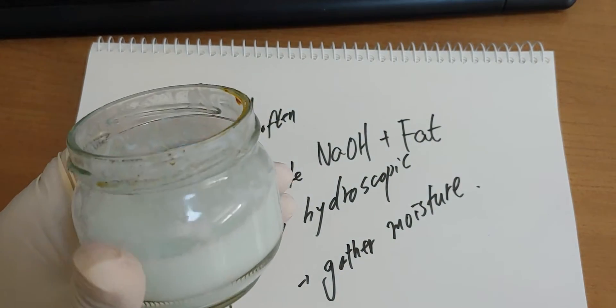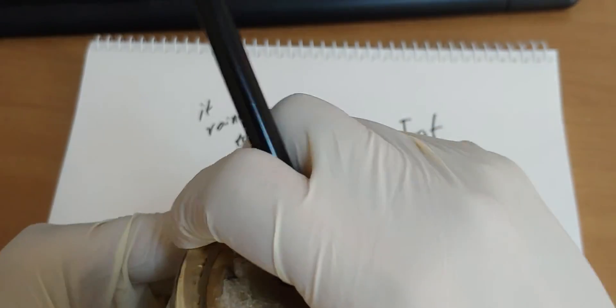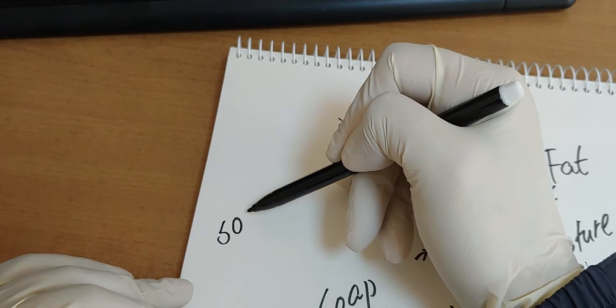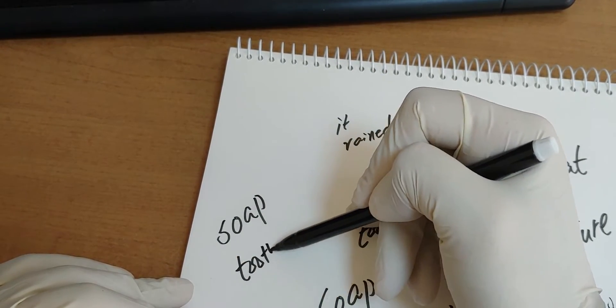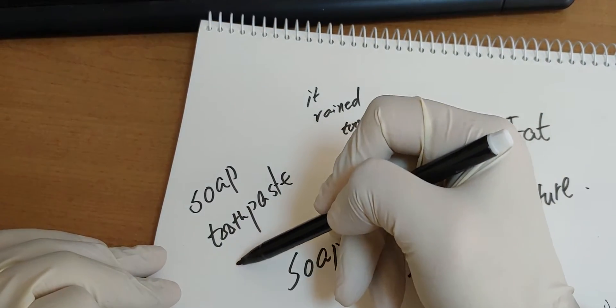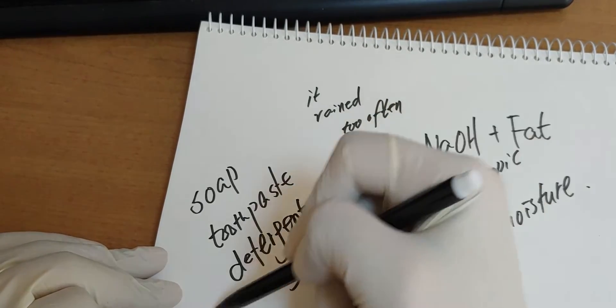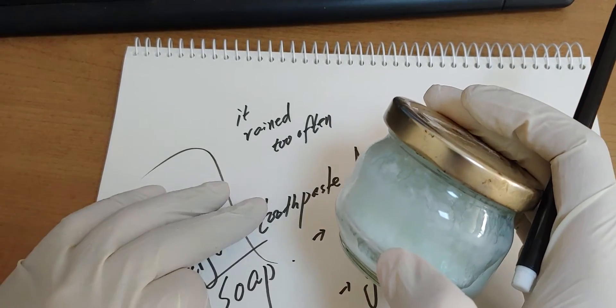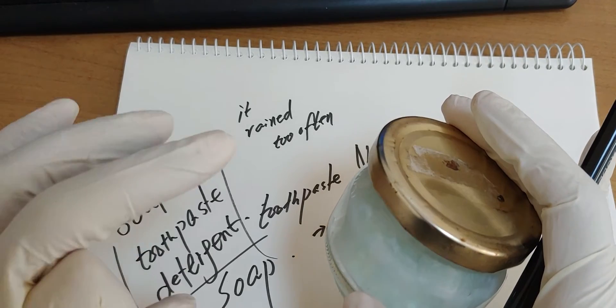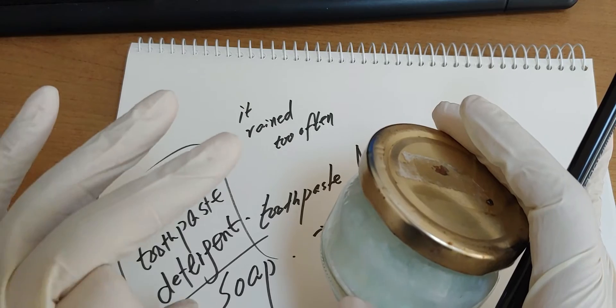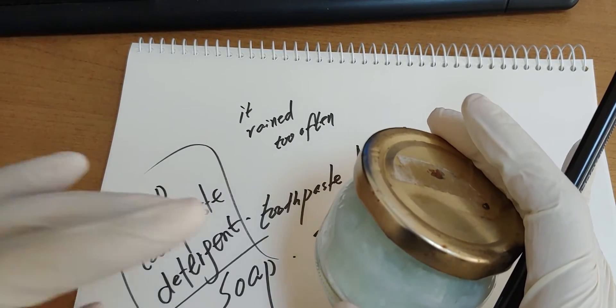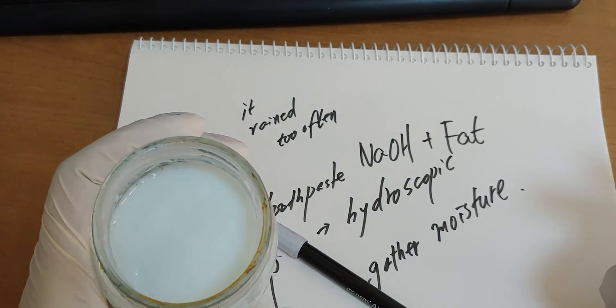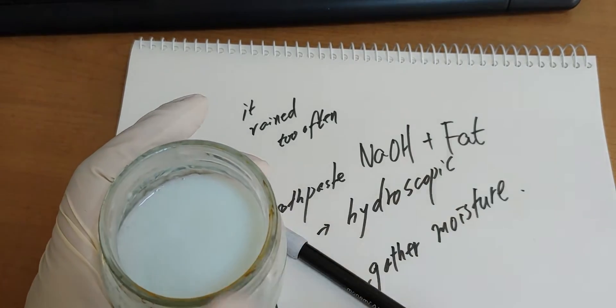So I made this one. This is the mixture of soap, toothpaste, and detergent. Although it rained very often, I could make solid state cathode by using soap, toothpaste, and detergent. When it becomes dry, it becomes a solid state cathode.